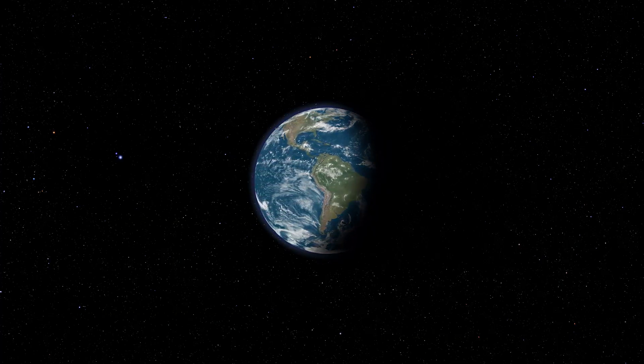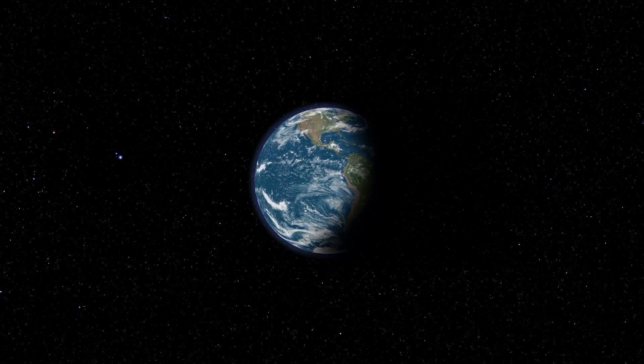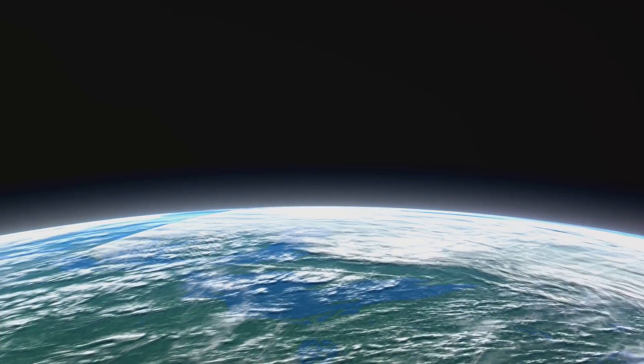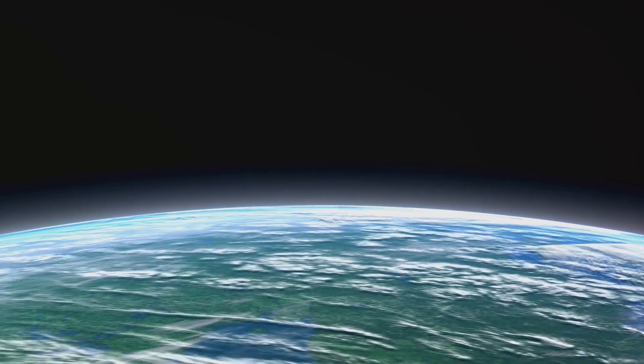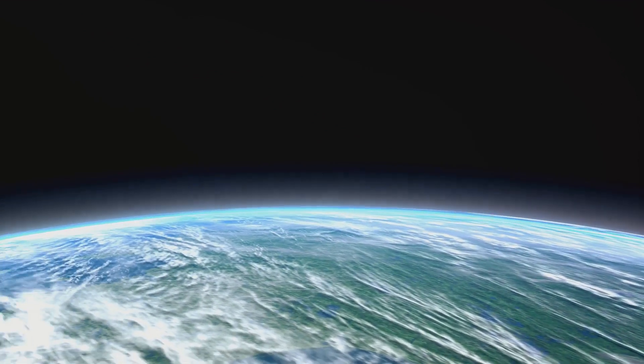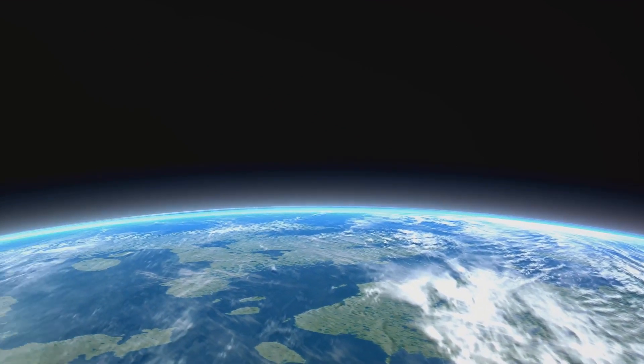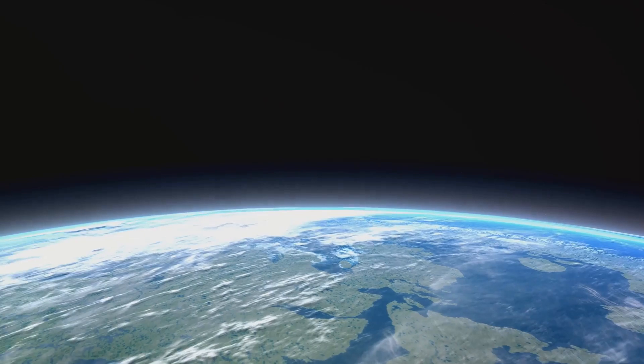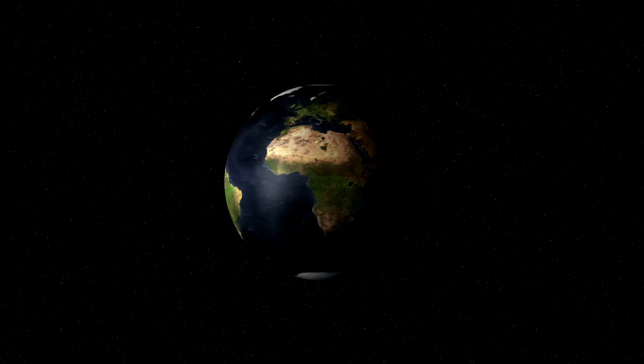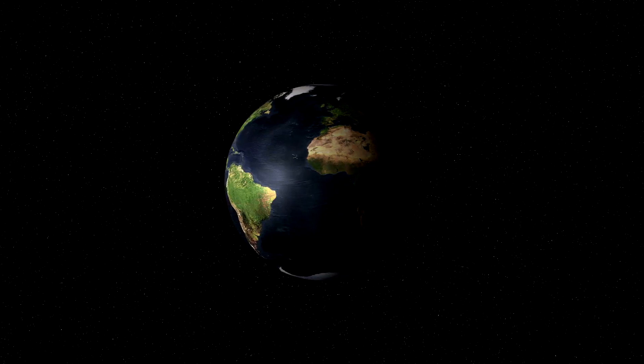Flat Earthers often point to the absence of visible curvature on the horizon as proof of a flat Earth. However, the Earth's curvature is subtle and difficult to observe from ground level due to the planet's vast size. From higher altitudes, such as those achieved during spaceflight, the curve of the Earth becomes evident.